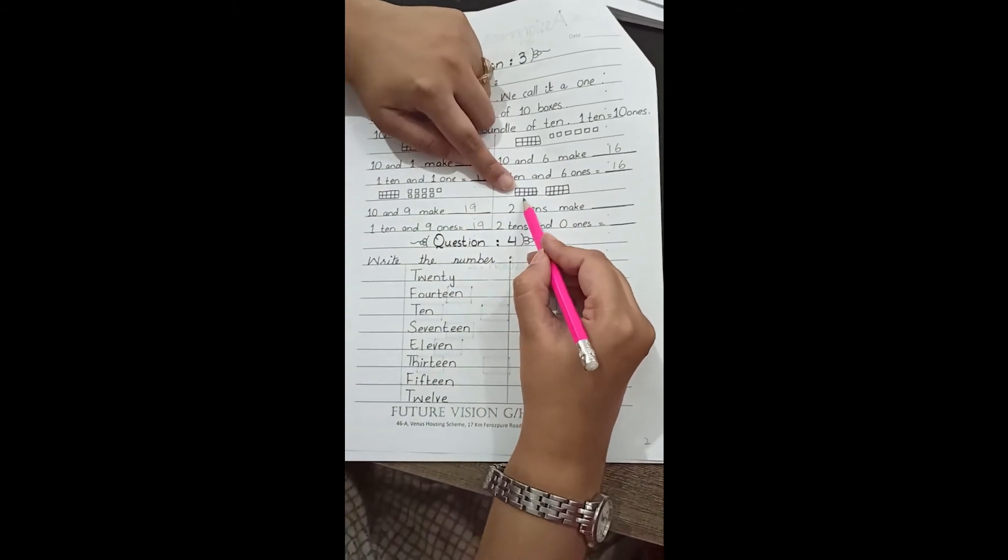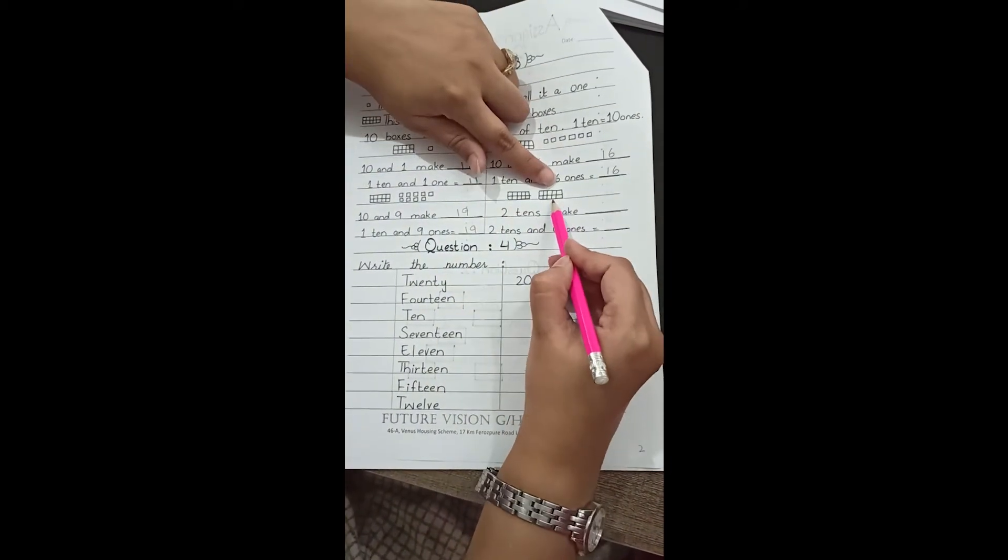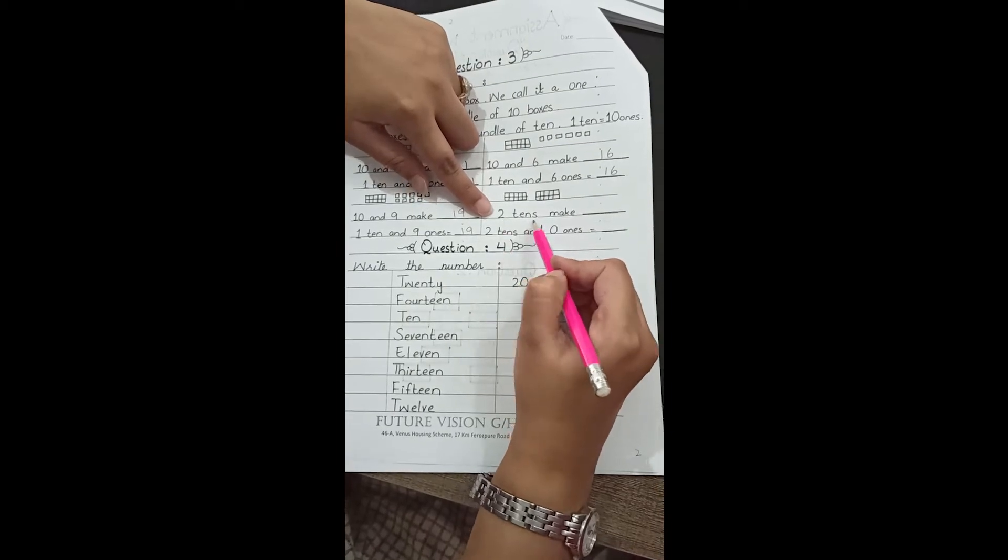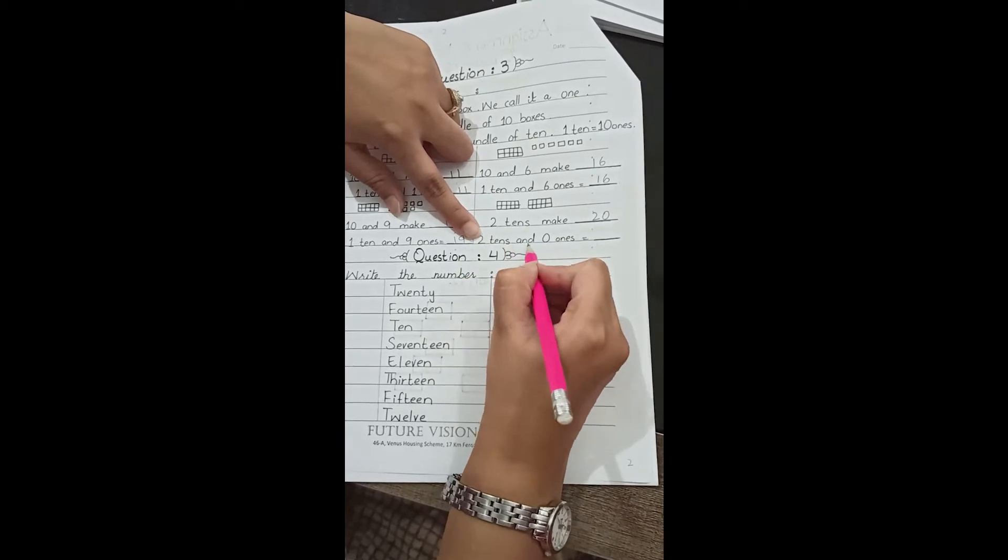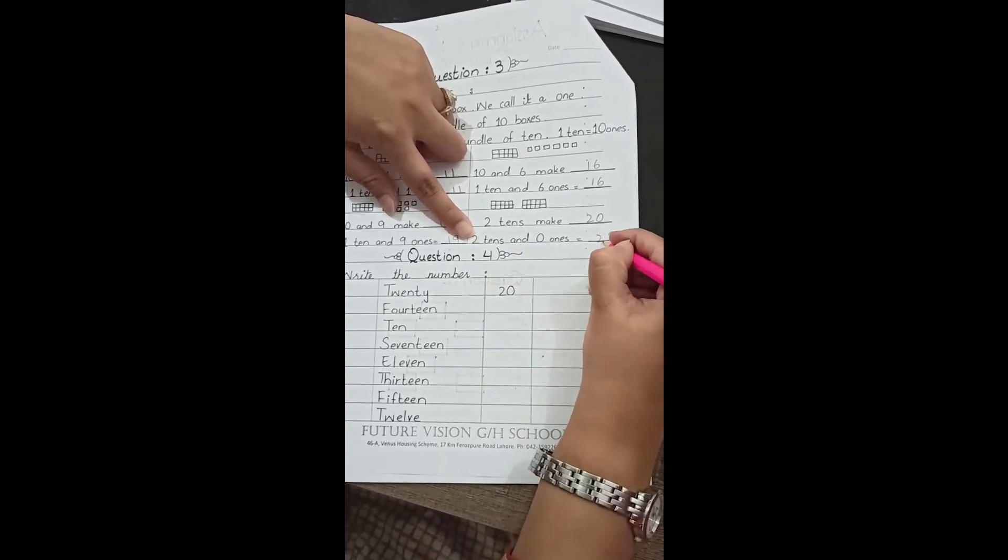Students, now count 1 bundle of 10, 2 tens. 2 tens will be equal to 20. 10 plus 10 equals 20. 2 tens and 0 ones will be equal to 20.